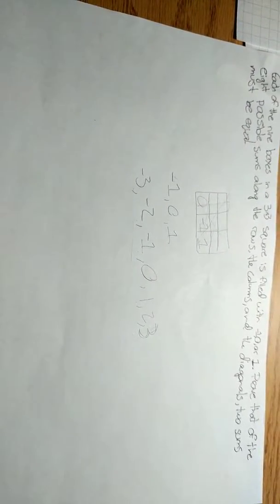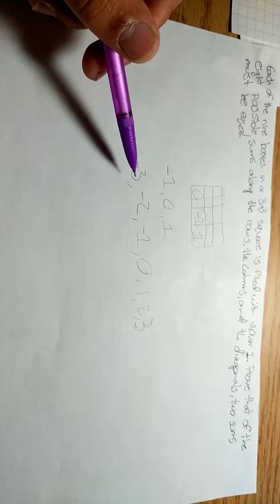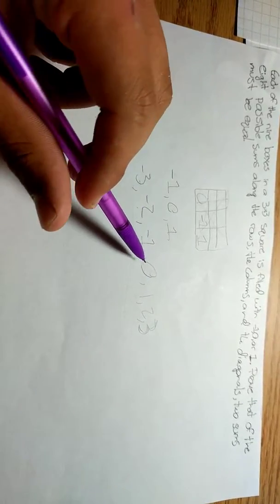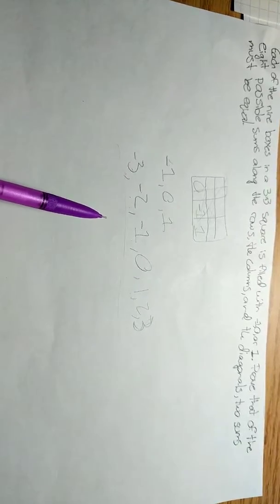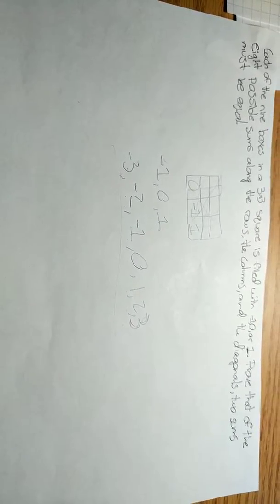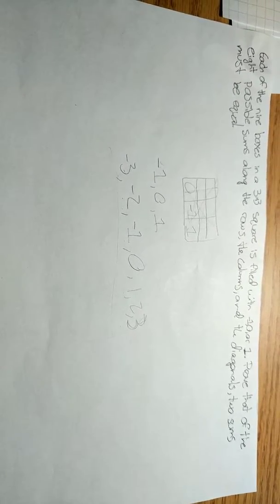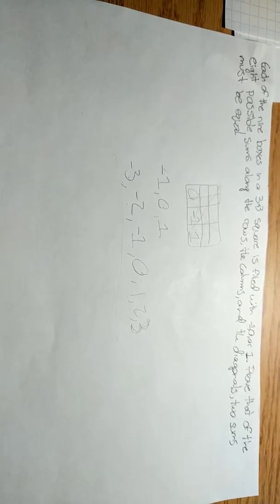Which means that even in the worst case scenario, when among seven of the eight, each one has a different number, you still have an eighth row, column, or diagonal that'll have to repeat with another. So no matter what, two of the sums must be equal.